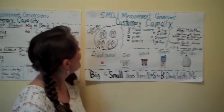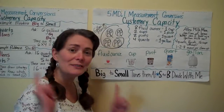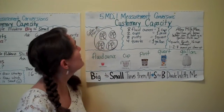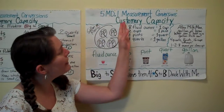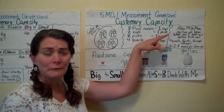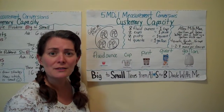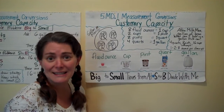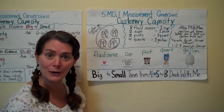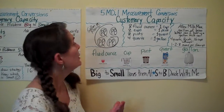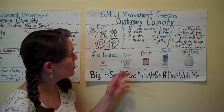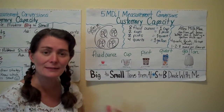Hey fifth grade. This week we are going to be moving into 5MD.1. Still working on measurement conversions, but this time we're going to be working on customary capacity — that's how much a container can hold. We're going to be looking at fluid ounces, cups, pints, quarts, and gallons.